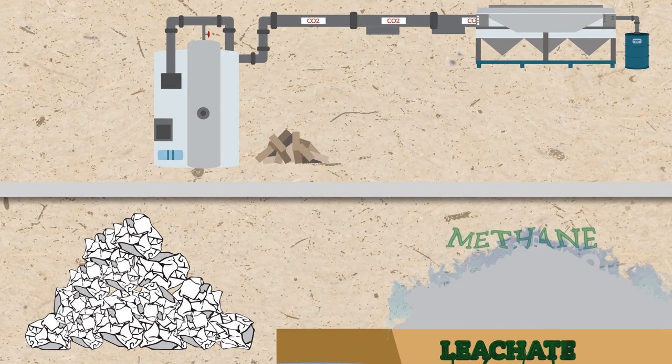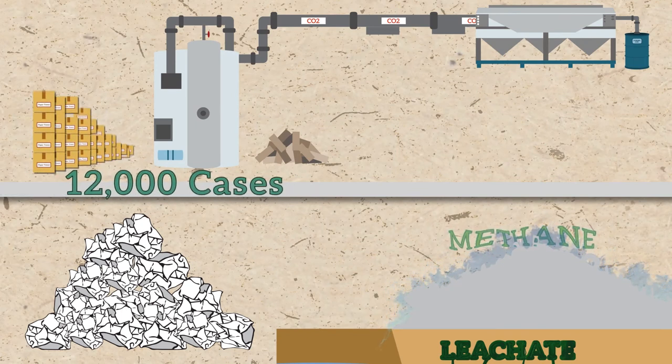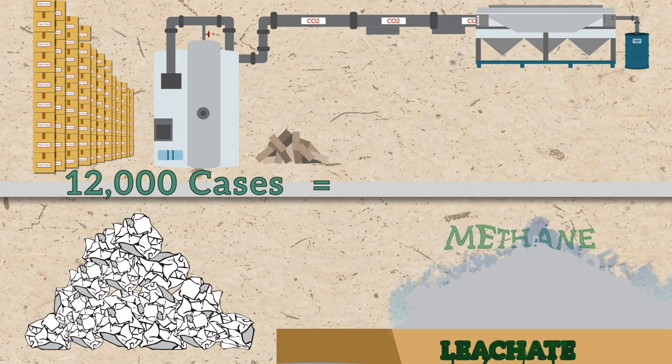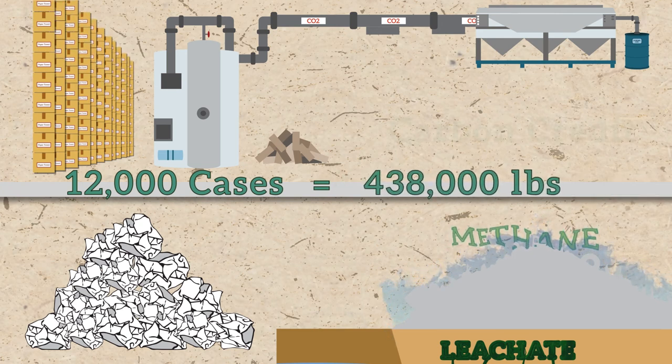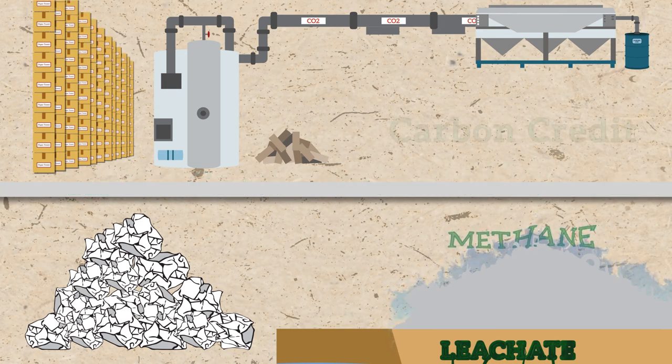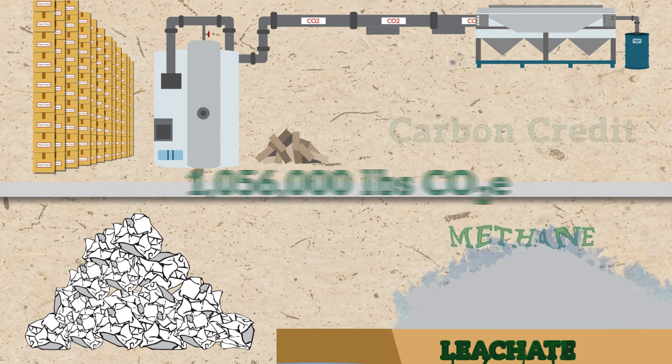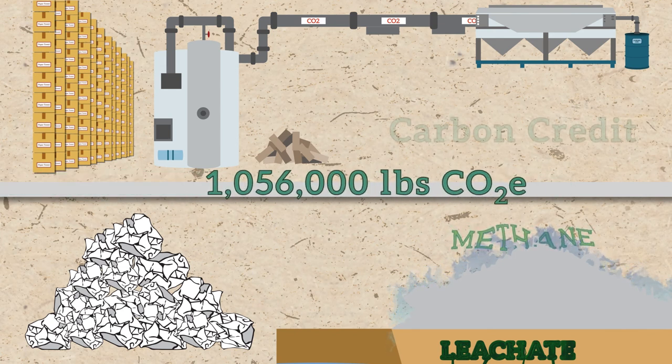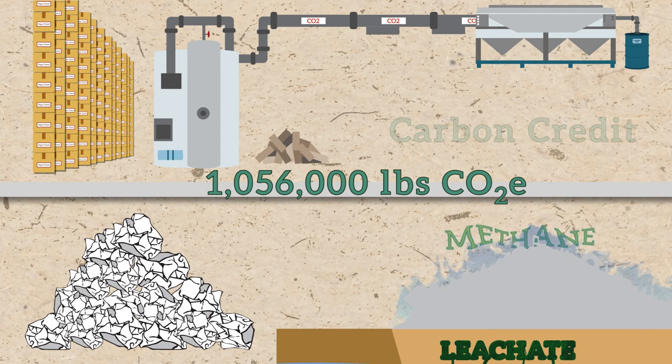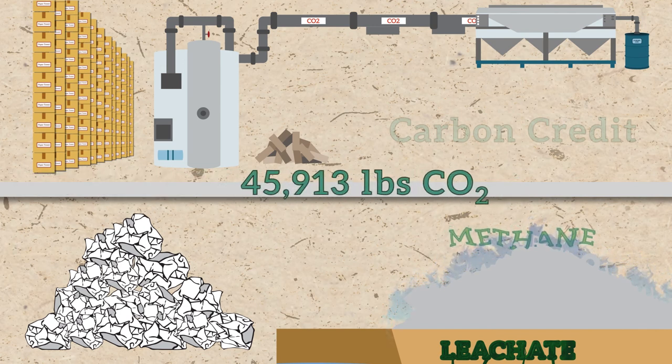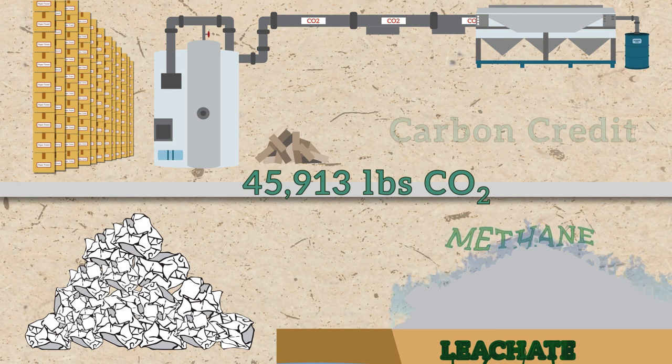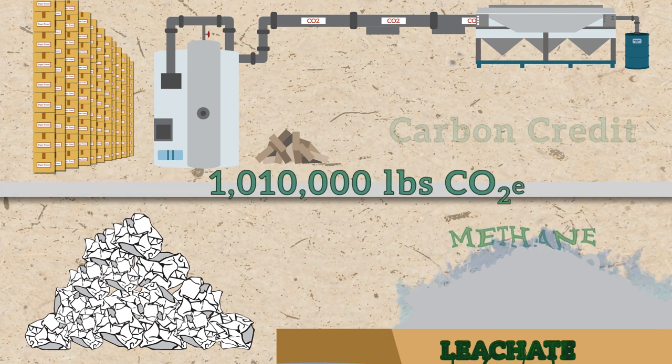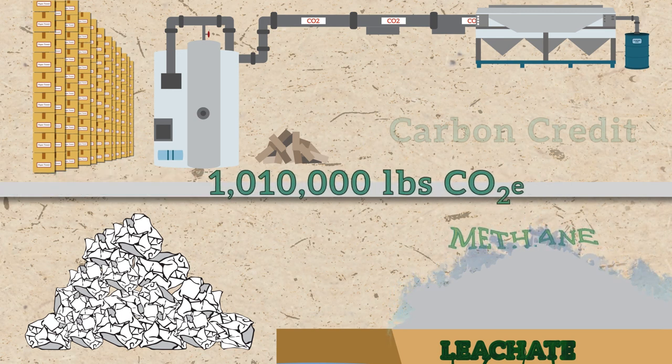Let's do the math on the YMCA biomass boiler. 12,000 cases of paper equals 438,000 pounds per year of biomass fuel. In landfill, this would decompose into 1,056,000 pounds of CO2 equivalent. The YMCA system will convert the same amount of waste into 45,913 pounds CO2, a reduction of 1,010,000 pounds CO2 equivalent.